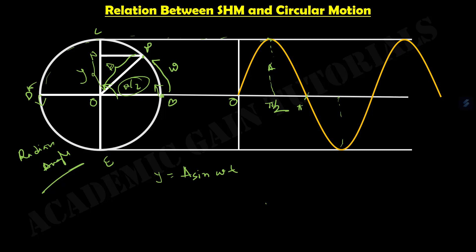When this particle moves from D to E, at an angle of three pi by two, the displacement becomes maximum again, equal to A. When it goes from E back to B and completes a full cycle of two pi, the displacement becomes zero again. Both the start and end points are equal because they both have the upward phase.